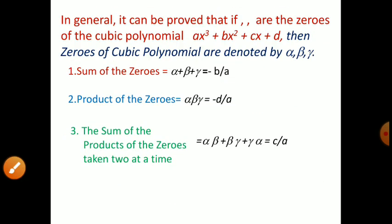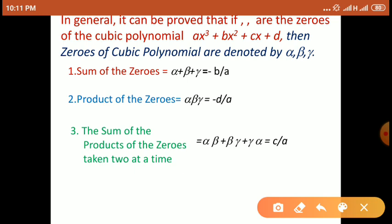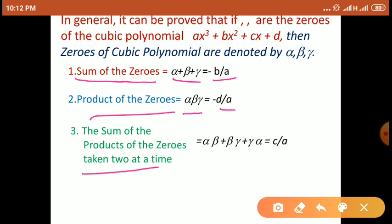उसी तरह हमने quadratic का sum of product of zeros का formula देखा है: c upon a. उसी तरह हमने cubic polynomial के zeros और coefficients के बारे में भी relation देखा है। Sum of zeros of cubic polynomial, यानी alpha plus beta plus gamma, उसका formula है minus b by a. Product of zeros, यानी alpha into beta into gamma, उसका formula है minus d by a. And sum of product of zeros taken two at a time, यानी alpha·beta plus beta·gamma plus alpha·gamma, इसका formula है c upon a. तो यह formulas याद रखना है।